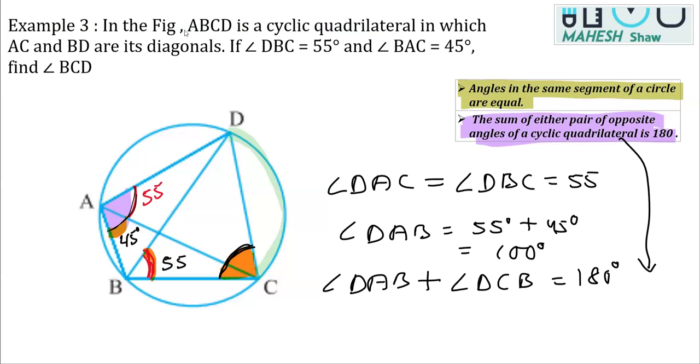As we know the value of DAB, so we can replace this with 100 plus angle DCB is what we have to calculate. So finally, we can say that angle DCB is equal to 180 minus 100 that is 80 degrees. This is what we need to calculate and we got this value.